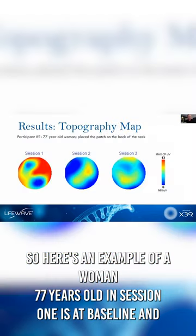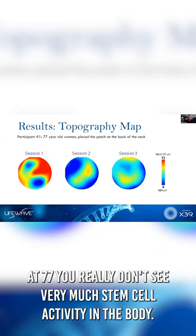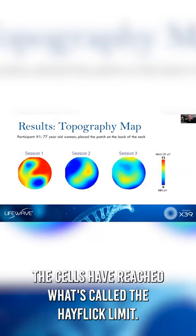So here's an example of a woman, 77 years old, and session one is at baseline. And at 77, you really don't see very much stem cell activity in the body. The cells have reached what's called the Hayflick limit. They've stopped dividing.